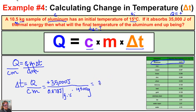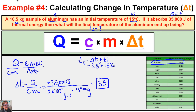Calculating gives us a delta T of 3.8 degrees Celsius. This is the change in temperature, not the final answer. To get the final temperature, we add delta T to the initial temperature: 3.8 plus 15 degrees Celsius equals 18.8 degrees Celsius. So the 10.5 kilogram aluminum sample, starting at 15 degrees Celsius and absorbing 35,000 joules, reaches a final temperature of 18.8 degrees Celsius.